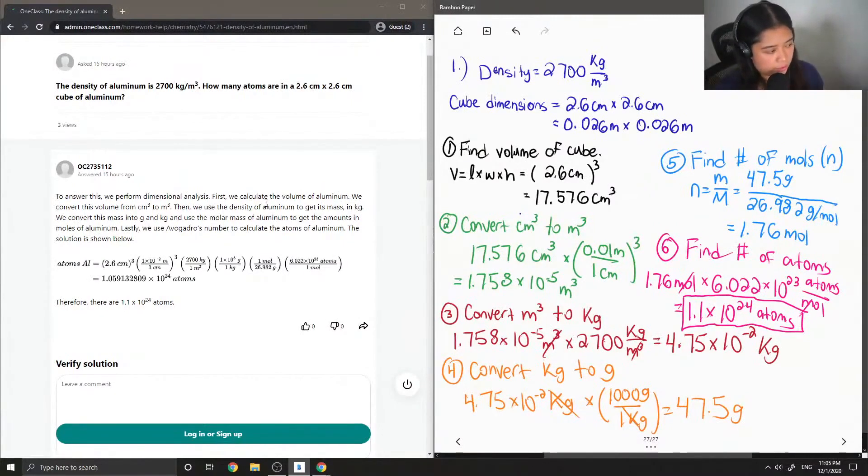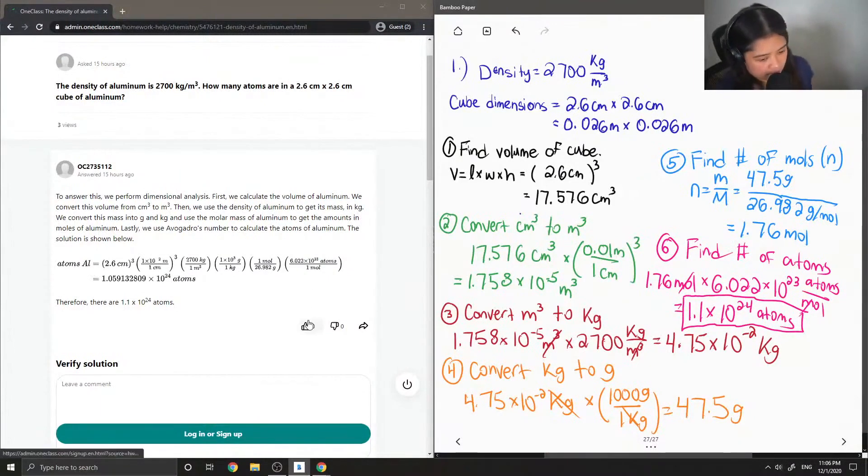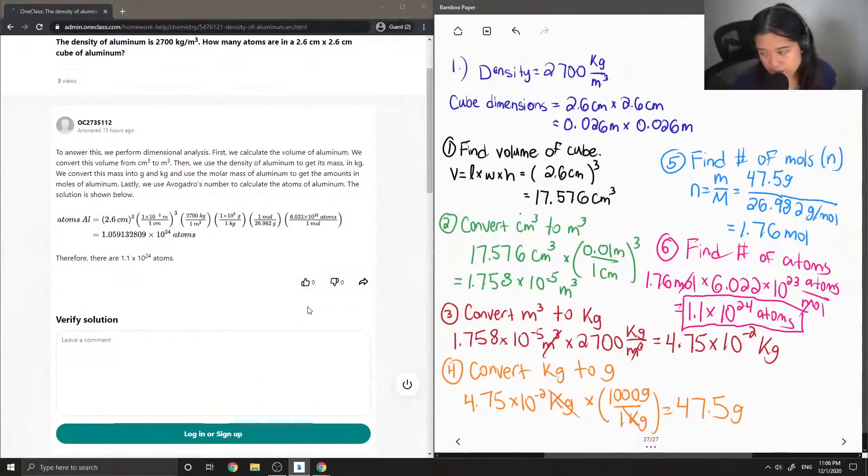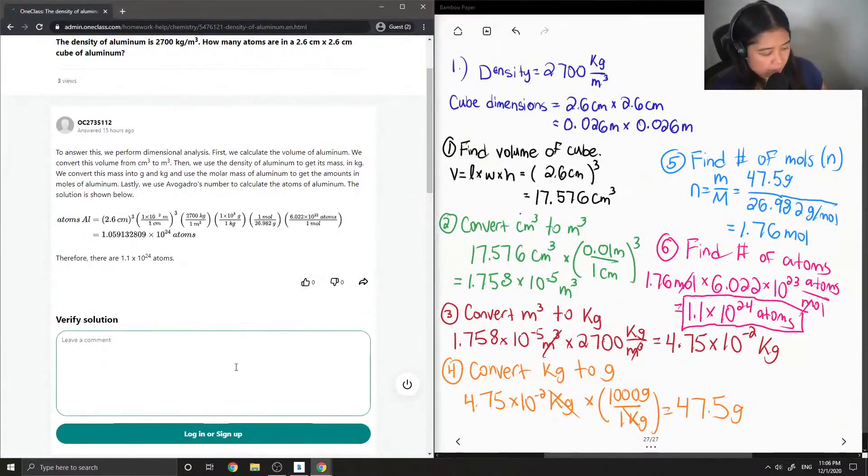The solution is shown below. So here they just showed all of these steps in one line. They started off with finding the volume of the cube, 2.6 cubed. And then they converted it to meters cubed, then converted it to kilograms, to grams, and then to moles, and then to atoms. And they also got 1.1 times 10 to the 24. This solution is correct.